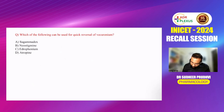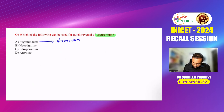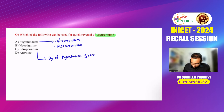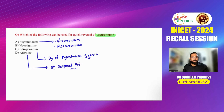The fourth question asks about quick reversal of vecuronium — this is a clear-cut question. Sugammadex is useful for the quick reversal of vecuronium and rocuronium. For other neuromuscular blockers, we use neostigmine. Edrophonium is useful for the diagnosis of myasthenia gravis. Atropine is the antidote of organophosphate compound poisoning. So the answer is sugammadex.